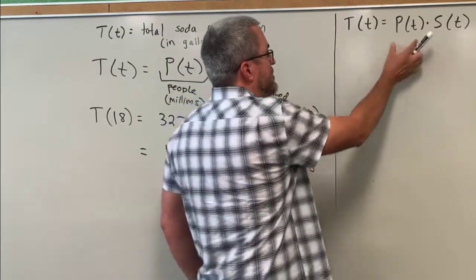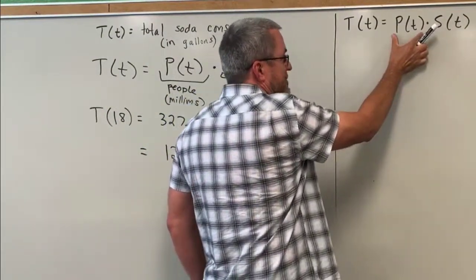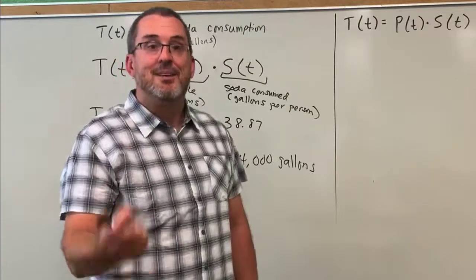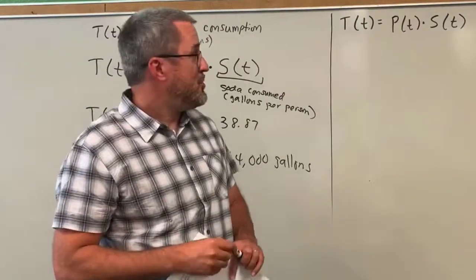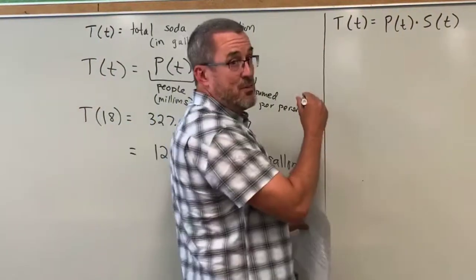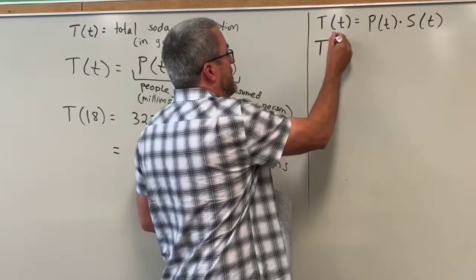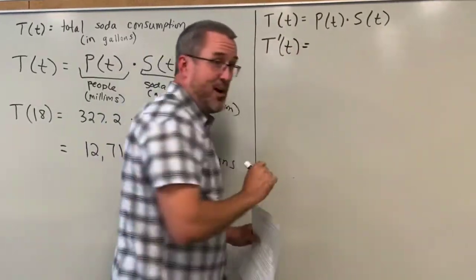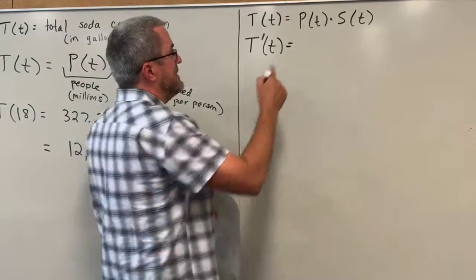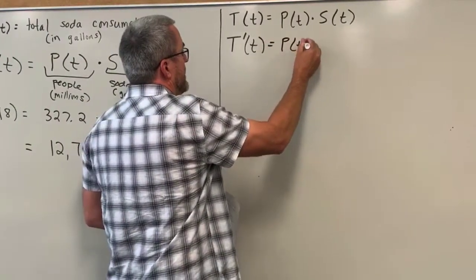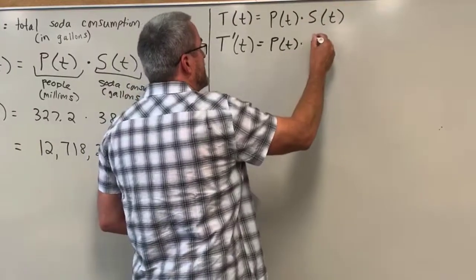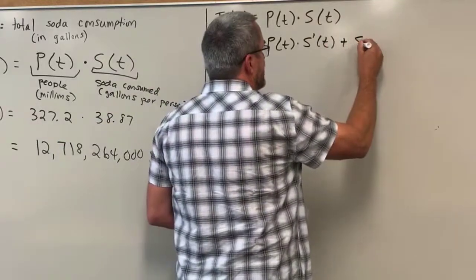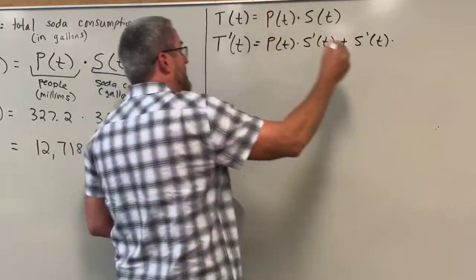The total amount of soda pop consumed is a product of population and per-capita consumption, so the product rule is the way to determine this rate of change. The derivative of total consumption is found by applying the product rule: take the first function and multiply it by the derivative of the second function, plus the second function times the derivative of the first function.